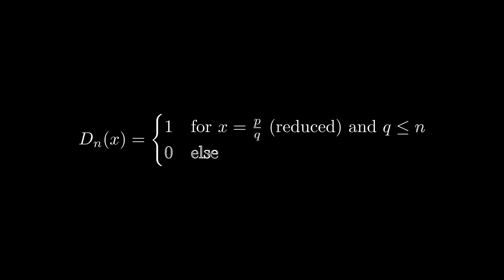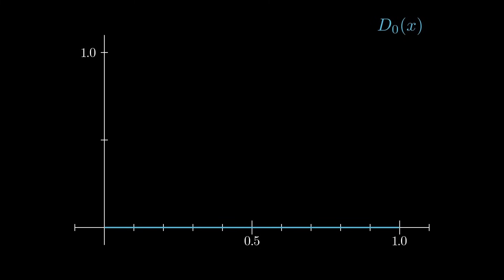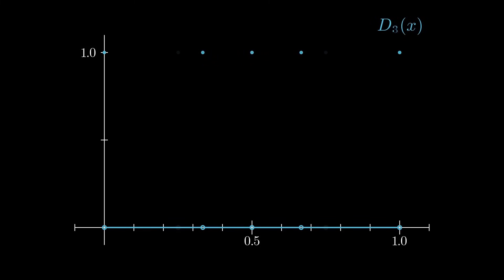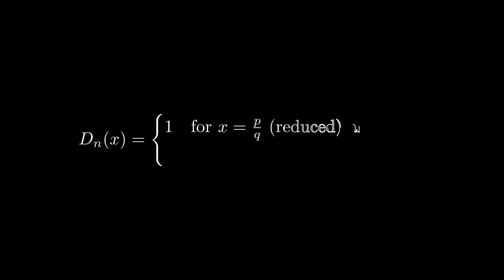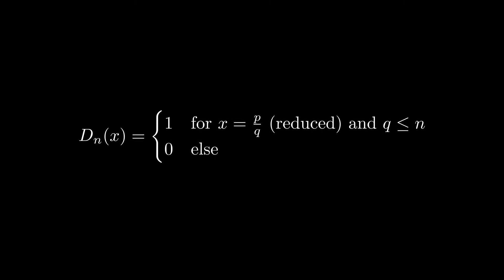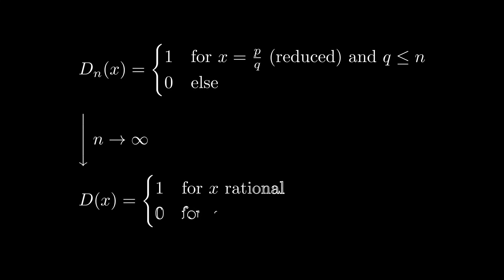Let's look at a series of functions. Each function is only discontinuous on finitely many rational numbers whose denominator is sufficiently small. As there are only finitely many discontinuities, these functions are Riemann integrable by the same reasoning as before. But as we let n tend to infinity, we get a function which is 1 for all the rationals and 0 for all the irrationals.